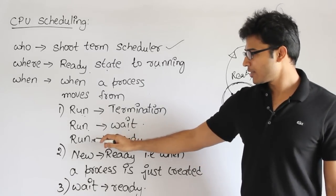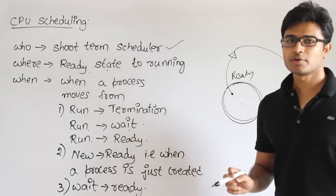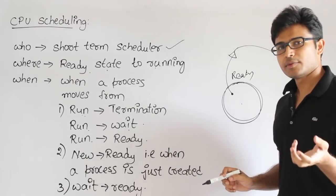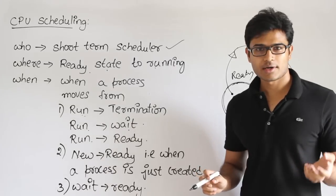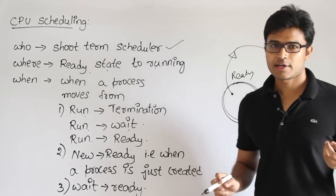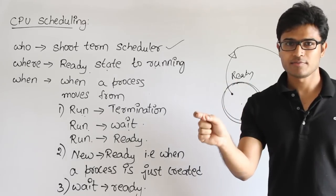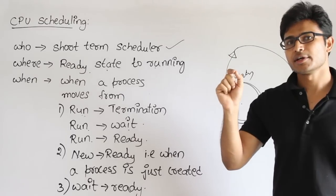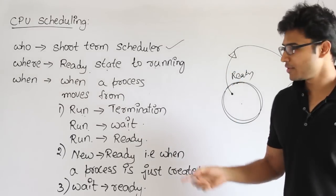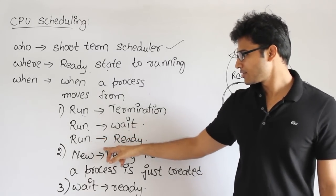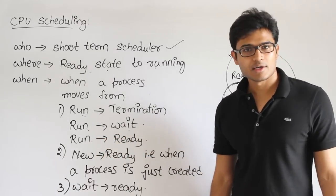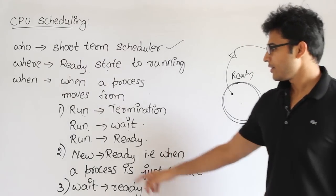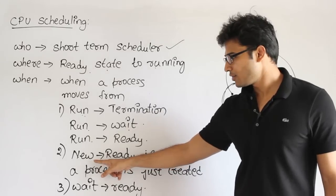A process can also go from running to ready. There are two ways this happens. First, there is a timer — also called quantum time. Every process is set a time limit for how long it can use the CPU. When that time expires, a timeout event triggers and the process moves from running state back to ready state.